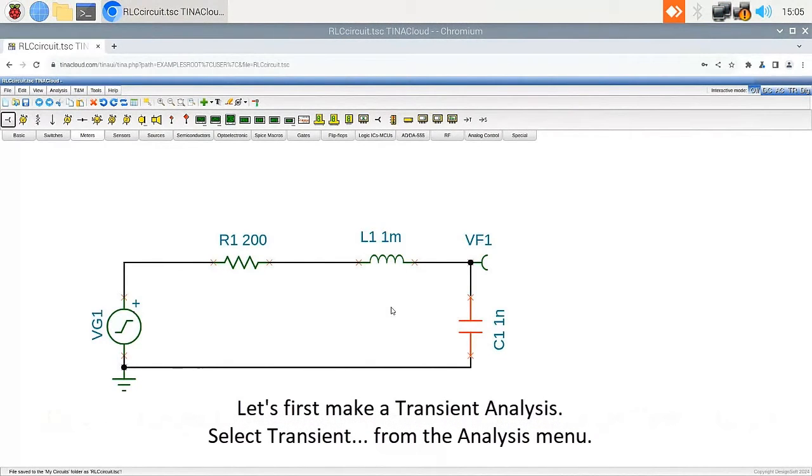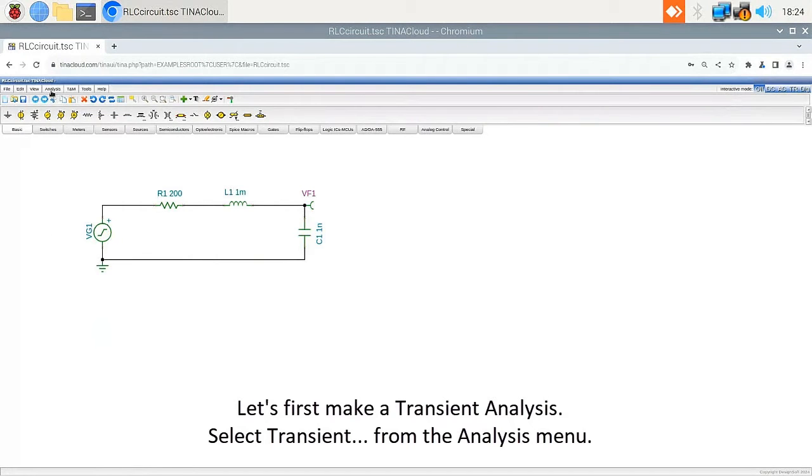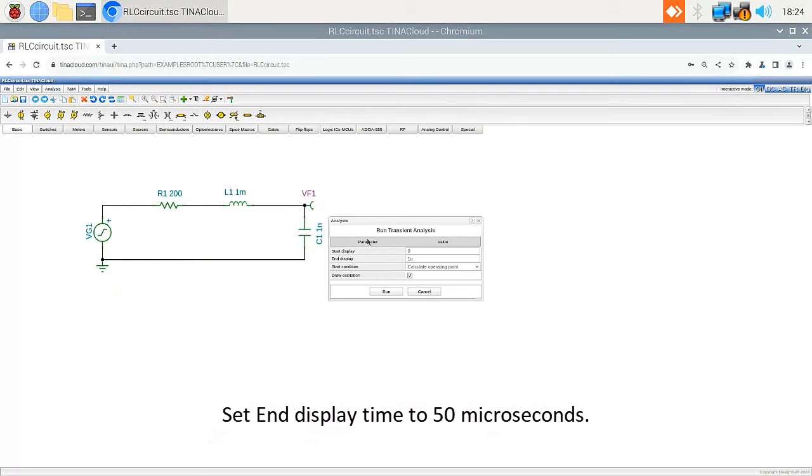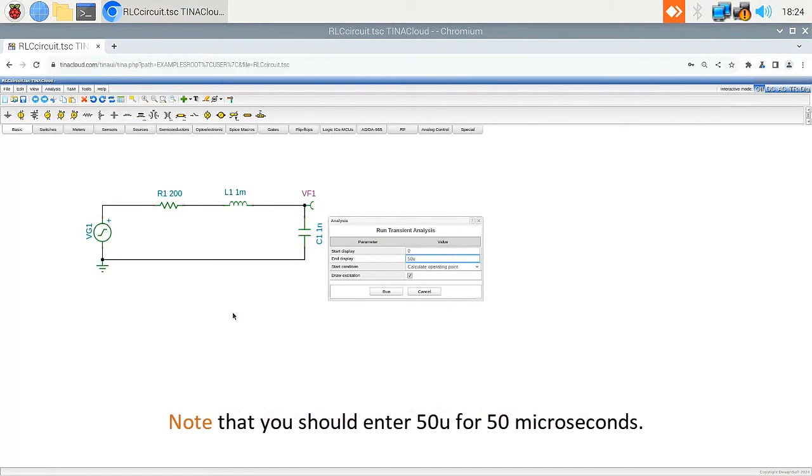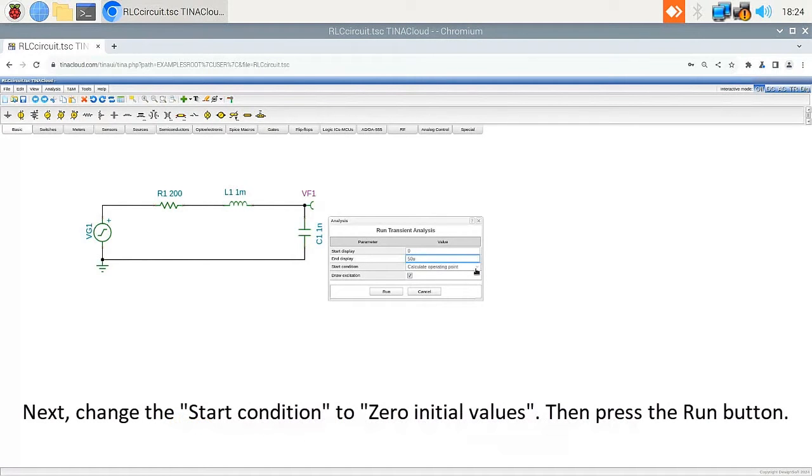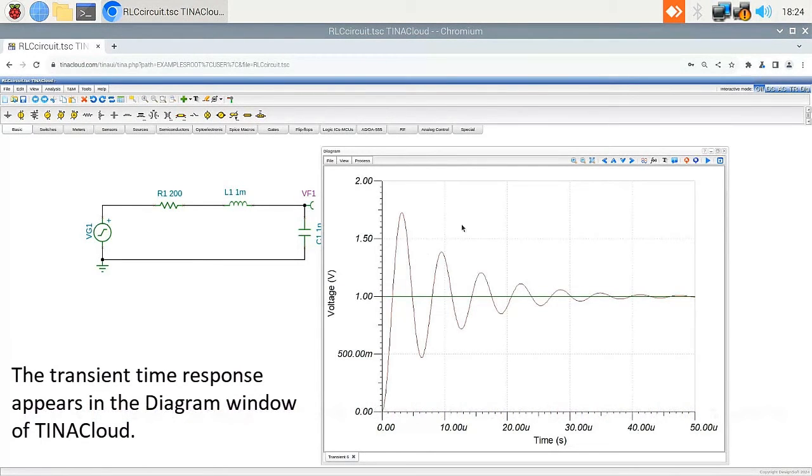Let's first make a transient analysis. Select Transient from the Analysis menu. Set the end display time to 50 microseconds. Note that you should enter 50U for 50 microseconds. Next, change the start condition to 0 initial values. Then press the Run button.